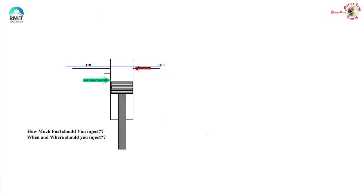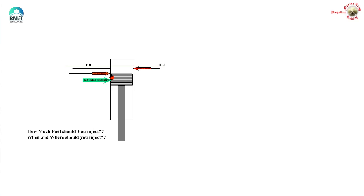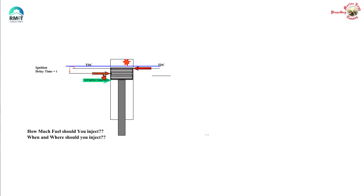The next important definition is ignition lag or ignition delay. The piston is going on its way up and somewhere we are going to inject the fuel. Here the fuel is going to get injected at a particular point. As soon as the fuel is injected, it will not ignite even if the self-ignition temperature is available — it will only ignite after a particular time. This particular time is called the ignition delay. The fuel got injected at this point and it is still not burning. The piston travels up, touches the TDC and comes down, and then on its way down, combustion happens. The time elapsed between the injection of the fuel and the actual burning is called the ignition delay.